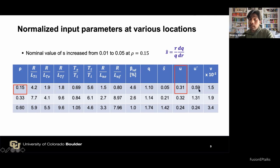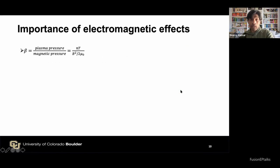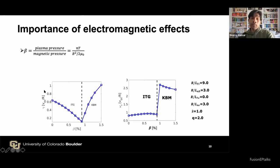This region also has a very high total rotation with a Mach number of 0.31. Before presenting results for this JET discharge, I will discuss the importance of electromagnetic effects. The extent of electromagnetic effects is characterized by plasma beta, defined as the ratio of plasma pressure to magnetic pressure. If I plot the growth rate as a function of beta for some standard cases, we can see how plasma beta matters.